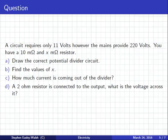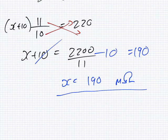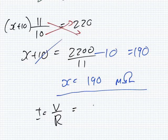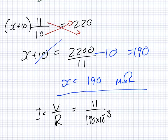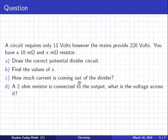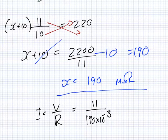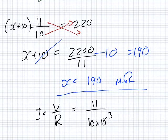How much current do we have? The formula for current is V over R. We know the V is 11 and R2 is 10 milli-ohms, which is 10 × 10⁻³. So I need the current through R2. That gives a big number — about 1100 amps.